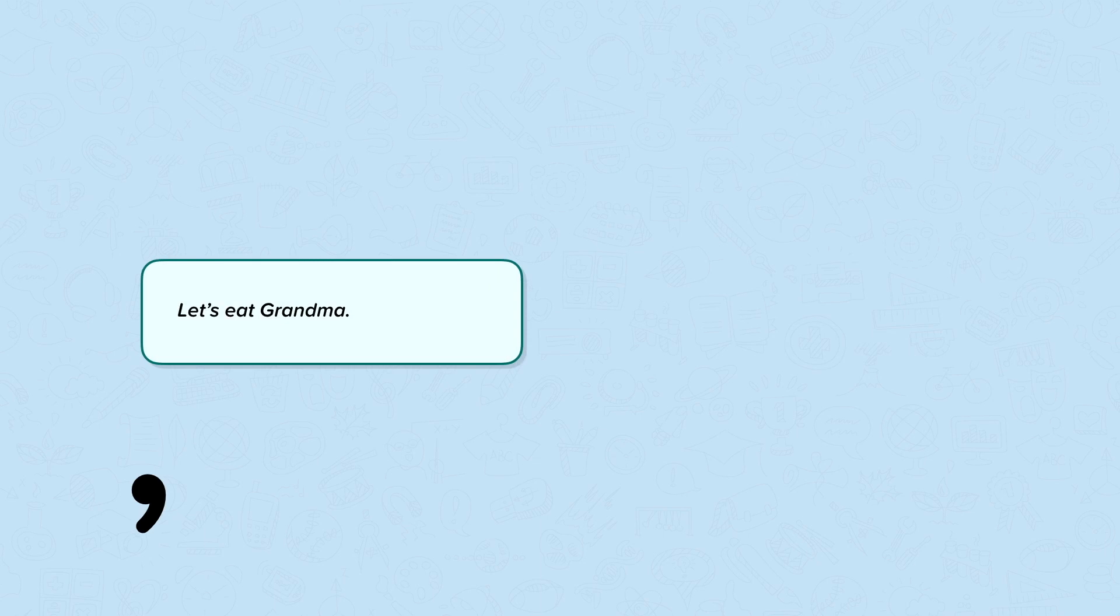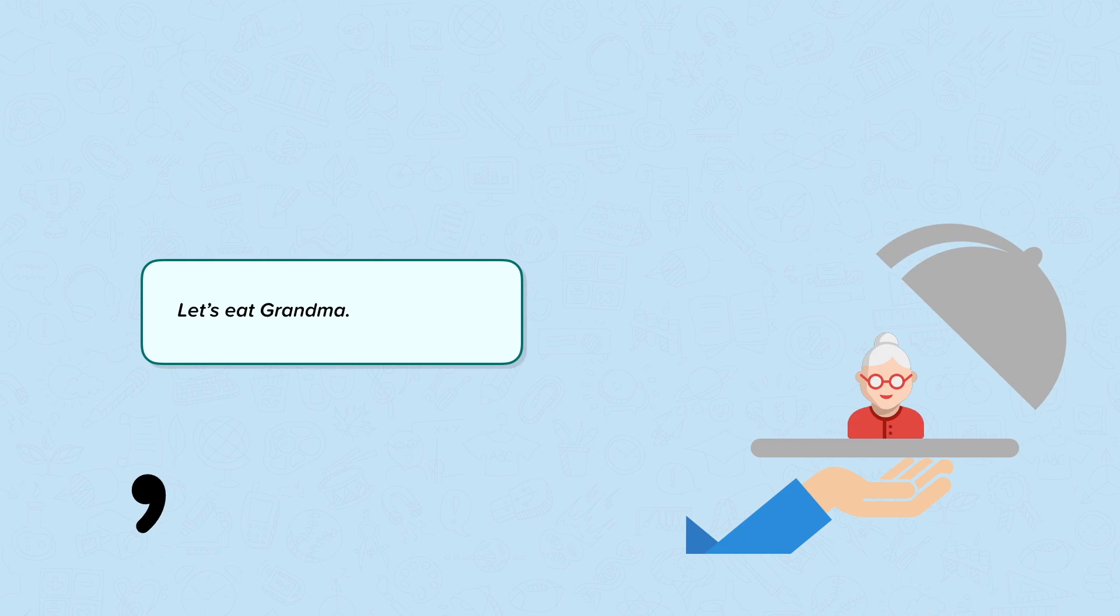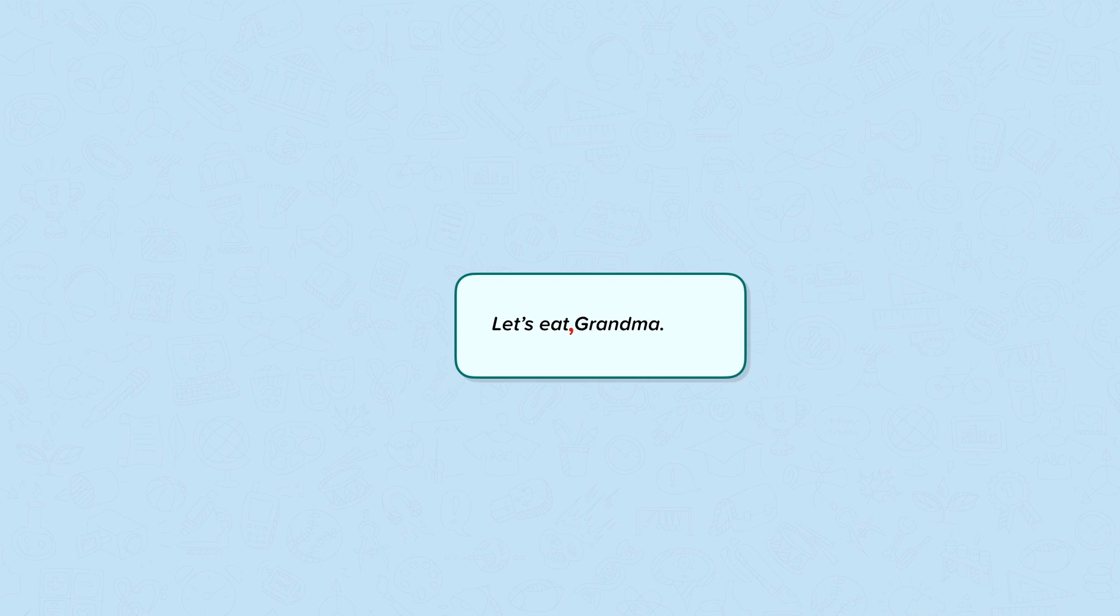A famous example of using commas to clarify meaning is this sentence: Let's eat grandma. This sentence suggests that we should eat grandma. But by including a comma in this sentence, Let's eat, grandma, we are inviting grandma to eat. The comma saves grandma's life.